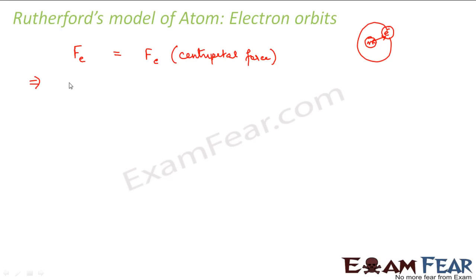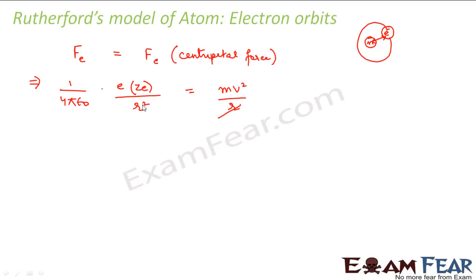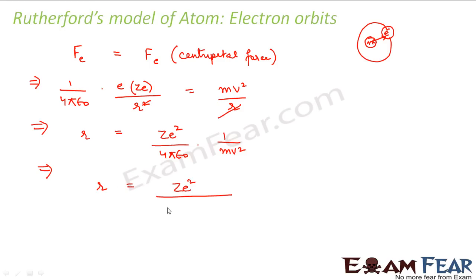Now what is the electrostatic force of attraction? It is given by Coulomb's law: 1 by 4 pi epsilon naught, into charge on an electron E, into charge on the nucleus Ze, divided by R squared. This is equal to the centripetal force, which is Mv squared by R. So this R cancels, and we get R is equal to Ze squared divided by 4 pi epsilon naught into Mv squared.